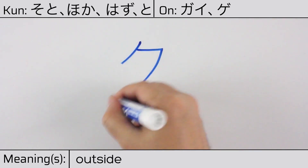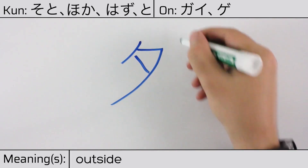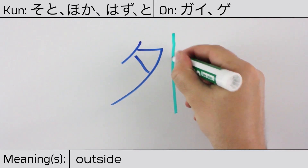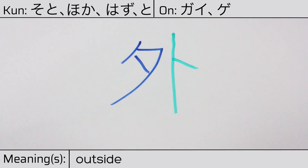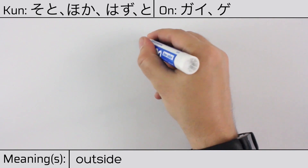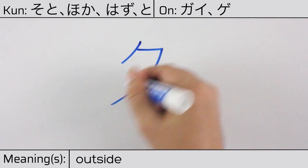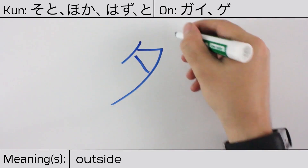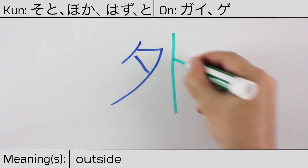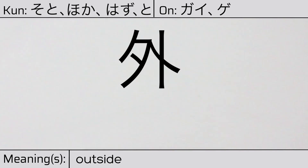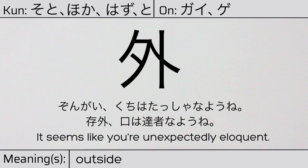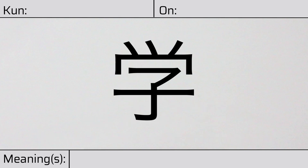The radicals are: evening or sunset on the left, and katakana to or the oracle radical on the right. You can remember this kanji by the following hint: in the early evening, fortune tellers sit outside. Our example sentence is: Songai, kuchi wa tassha no yōu ne — It seems like you're unexpectedly eloquent.